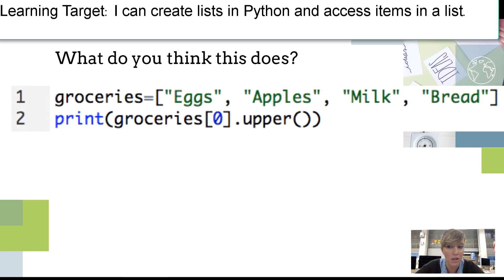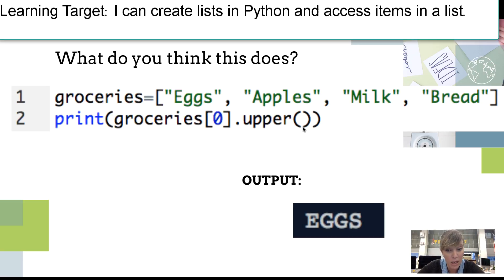What do you think this does? If I say groceries at index value zero and then add the upper() method with open and closed parentheses, it would print out 'EGGS' in uppercase. You can attach this method to this single object — everything that's in the zero position index value of this list.